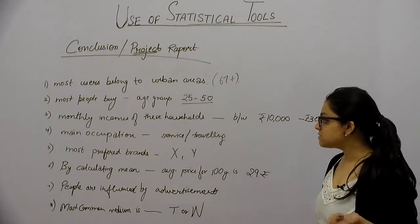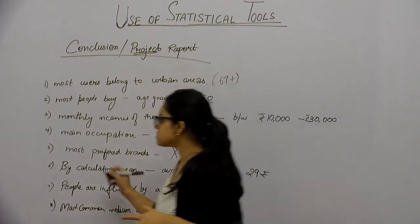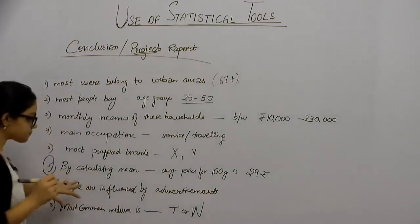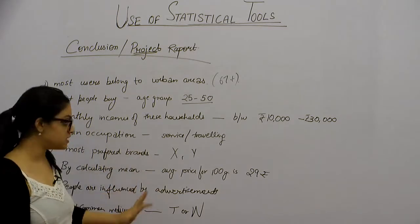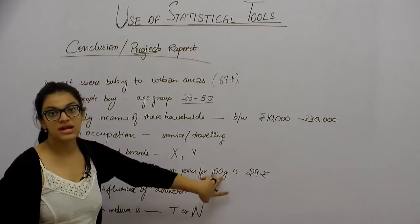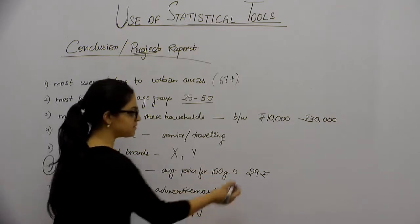By calculating mean, this is very important. If we take all toothpaste prices, you will know that on average, the price of 100 grams of toothpaste is Rs. 29.